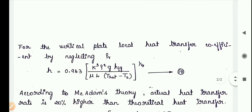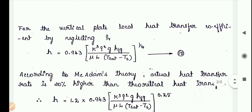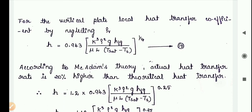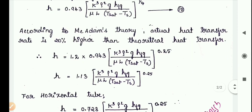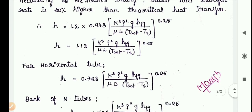For a vertical plate, neglecting ρv, the average heat transfer coefficient becomes h = 0.943 × [k³ × ρ² × g × hfg / (μ × L × (Tsat − Ts))]^(1/4). According to McAdams theory, the actual heat transfer rate is 20% higher than the theoretical value, so h becomes 1.2 × 0.943 × [...], which gives h = 1.13 × [k³ × ρL × g × hfg / (μ × L × (Tsat − Ts))]^0.25.